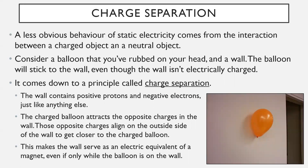Next up: charge separation. This one's a bit unusual. A less obvious behavior of static electricity comes from the interaction between a charged object and a neutral object. Consider a situation where you've rubbed a balloon on your head, giving it some sort of charge, and then you bring it near a wall that is neutral. The balloon will still stick to the wall, even though the wall isn't electrically charged at all — it's totally neutral. So why do they stick together? Even though one is negatively charged and the other is neutral, this comes down to a principle called charge separation.